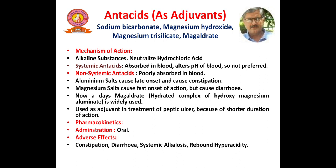Calcium salts cause constipation, and magnesium salts have a fast onset of action but cause diarrhea as a side effect. The solution is the combination of magnesium and aluminium salt, that is magaldrate, which is widely used. Magaldrate is a hydrated complex — hydroxy magnesium aluminate. Antacids are used as adjuvants in the treatment of peptic ulcers because of their shorter duration of action. Adverse effects include constipation, diarrhea, systemic calcinosis, and rebound hyperacidity.